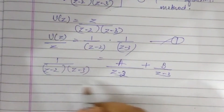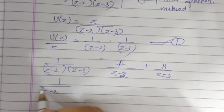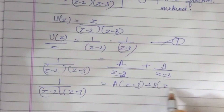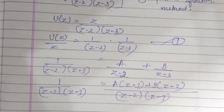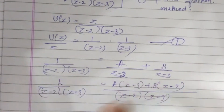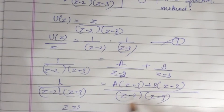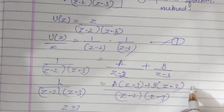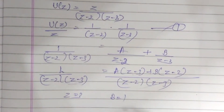Cross-multiplying gives us 1 equals A(Z minus 3) plus B(Z minus 2). The denominators cancel. This is the direct method to find A and B. When Z equals 3, the A-term becomes 0, and B times (3 minus 2) equals 1, so B equals 1.